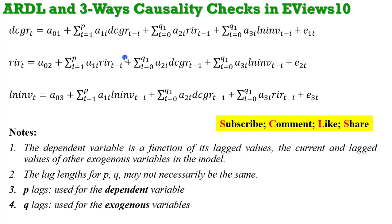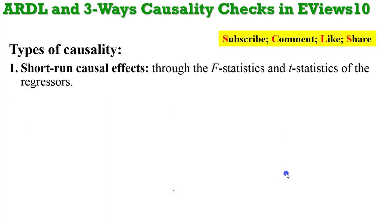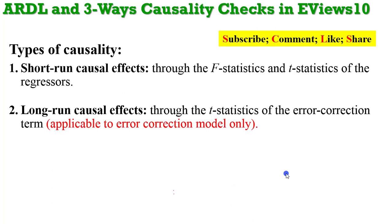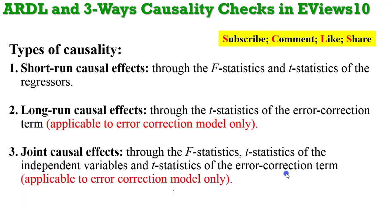The variables in an ARDL model may not necessarily have the same number of lags. Let's consider types of causality. We have short-run causal effects, which you can identify from the F-statistics and T-statistics of the regressors. We also look at long-run causal effects, which you can identify through the T-statistics of the error correction term — applicable only to the error correction model. We also talk about joint causal effects, identified through the combination of the F-statistics, the T-statistics of the independent variables, and the T-statistics of the error correction term.